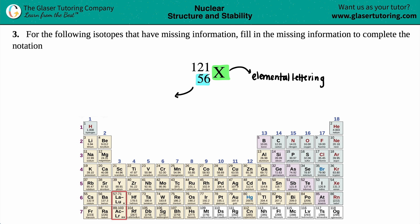So just for comparison, the top number, the 121, is the atomic mass. Now the reason why we go by the atomic number and not the atomic mass is because the atomic number will never change for a given element.